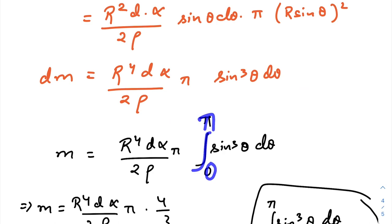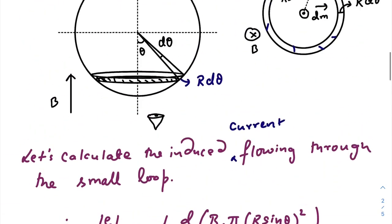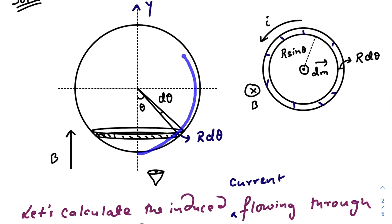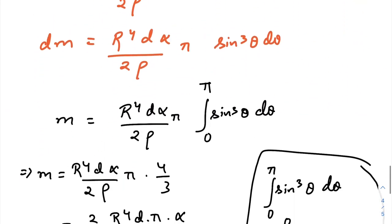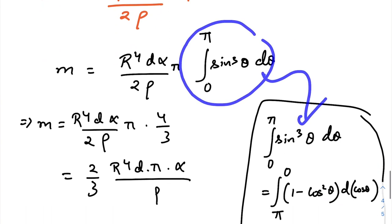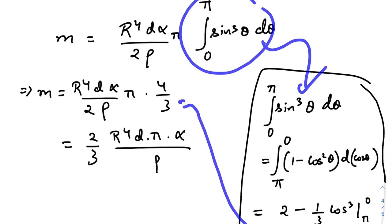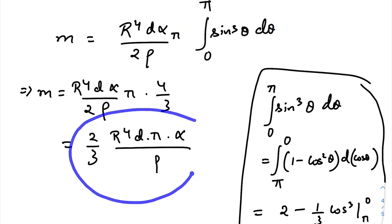Integrate it from the limit of zero to pi. Zero to pi because for zero to pi only you can fill up the whole non-magnetic shell. So just do the integration. Solving this one you will get four by three. Just put it here and finally you will get this result: two by three R to the power four d pi alpha by rho.